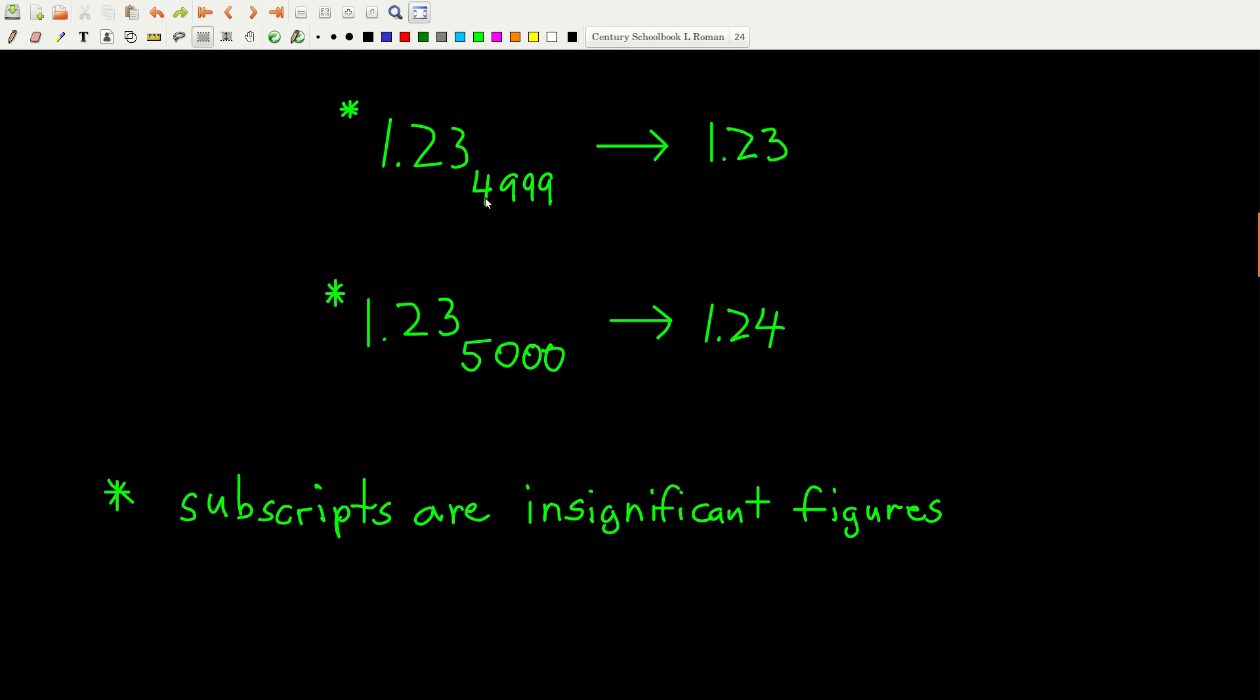But anyway, this number, because there are three significant figures and the first digit that I'm dropping, my first insignificant figure, is less than five, I'm just going to keep my last significant figure, the last one I keep as is. So I'd write this 1.23. It doesn't matter that all these are 999s out here. Don't do this recursively. In other words, don't round this up to five and then this up to four. No. When you're rounding, all you do is you look at your first one you're dropping. If it's less than five, keep it the same.